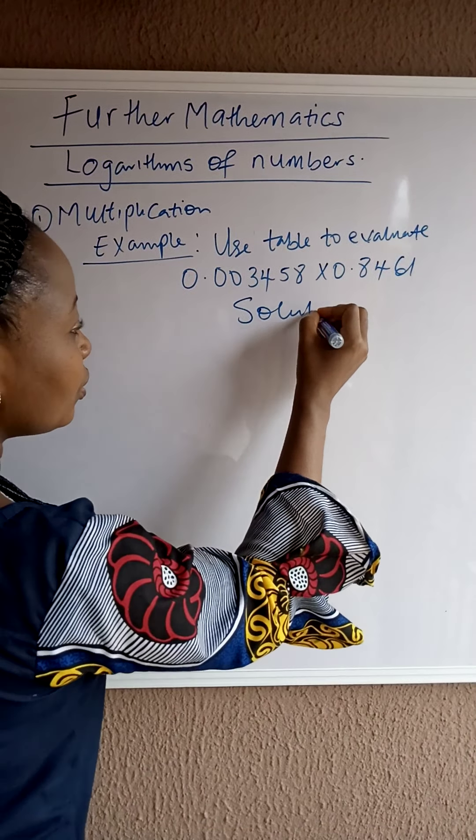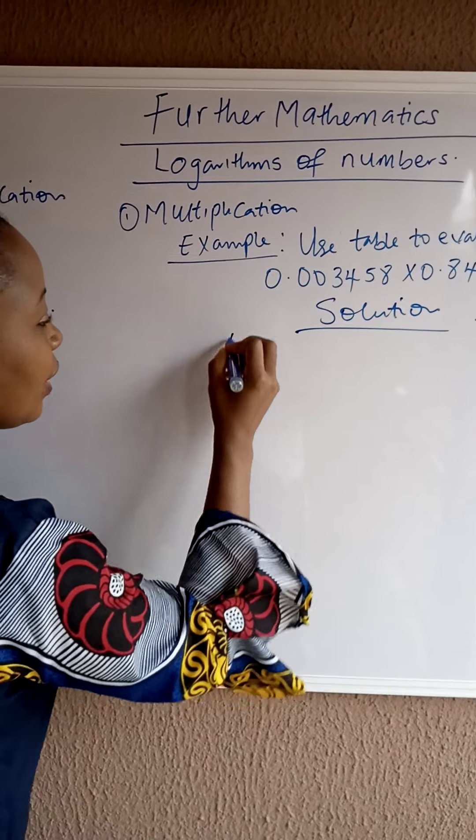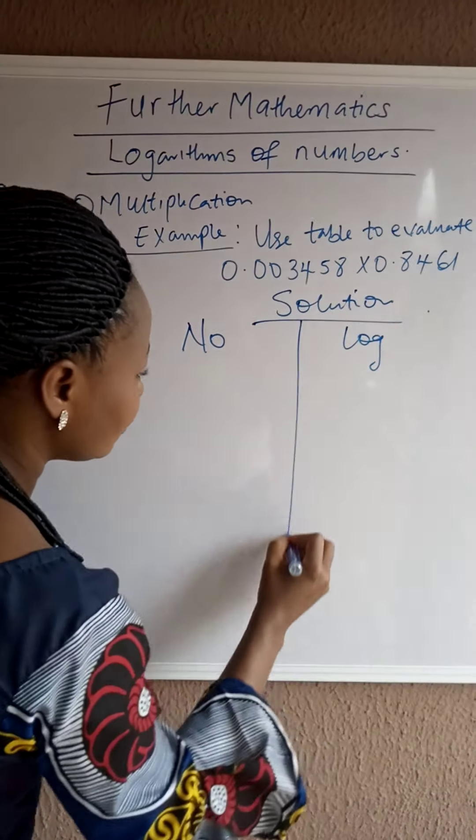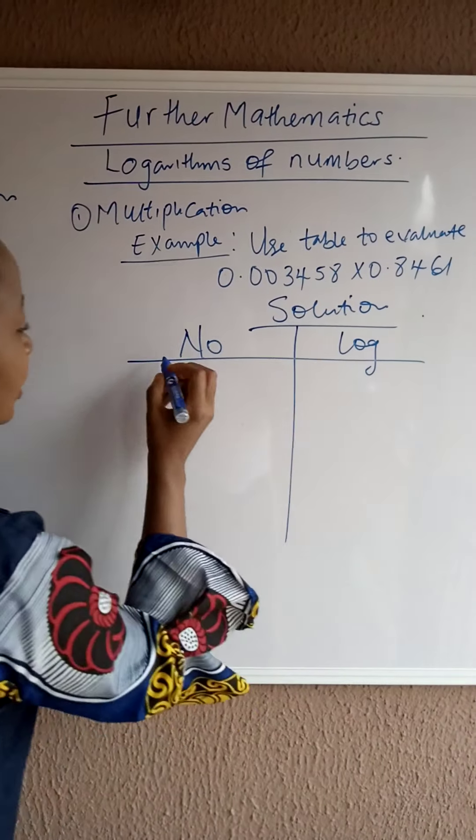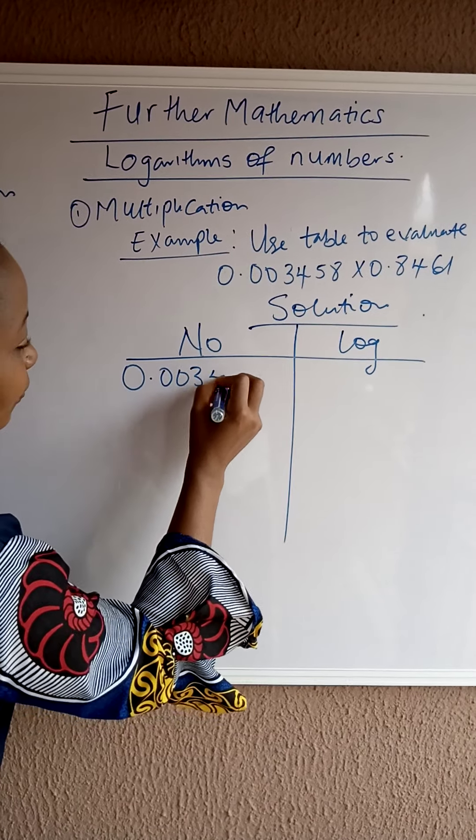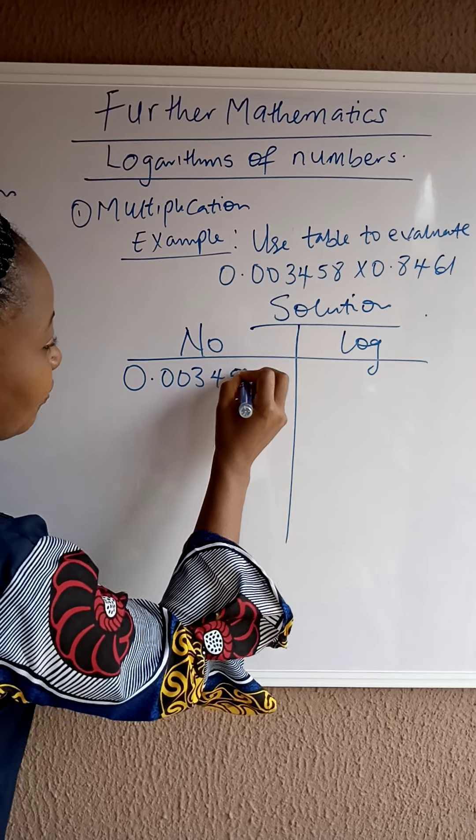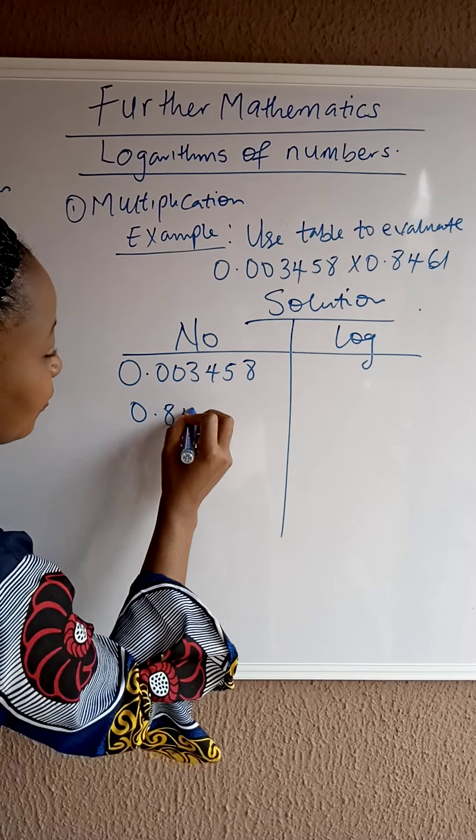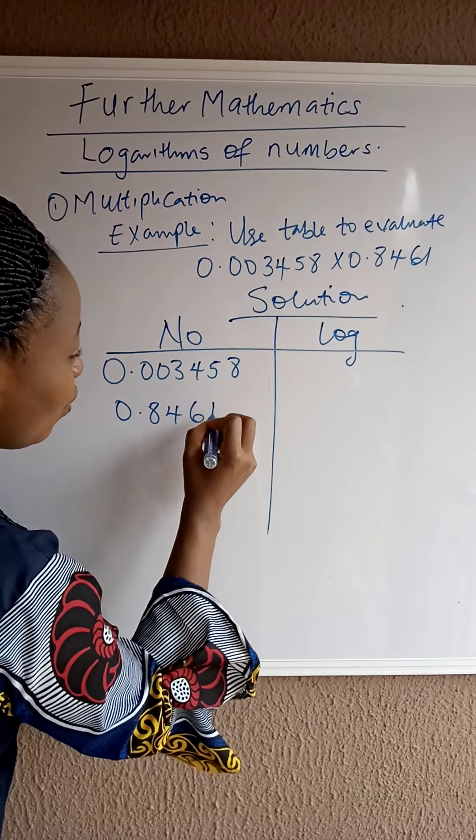Solution. We have a number and log. The question is 0.003458, while the second one is 0.8461.